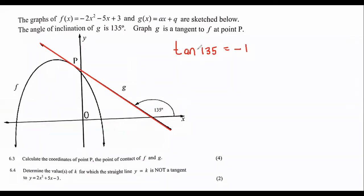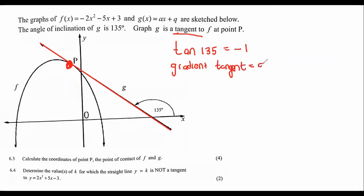What's really interesting is that if the gradient of that red line is negative one and we know that it's a tangent, then what can we say about the parabola at that point? We should remember that the gradient of a tangent is always the same as the gradient of the graph at the point of contact.